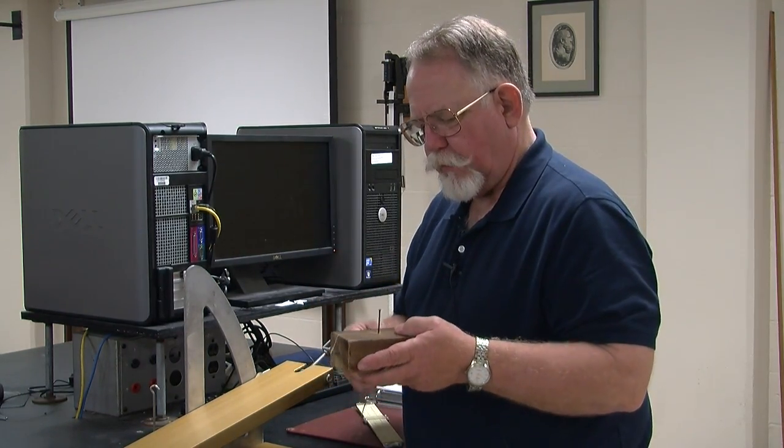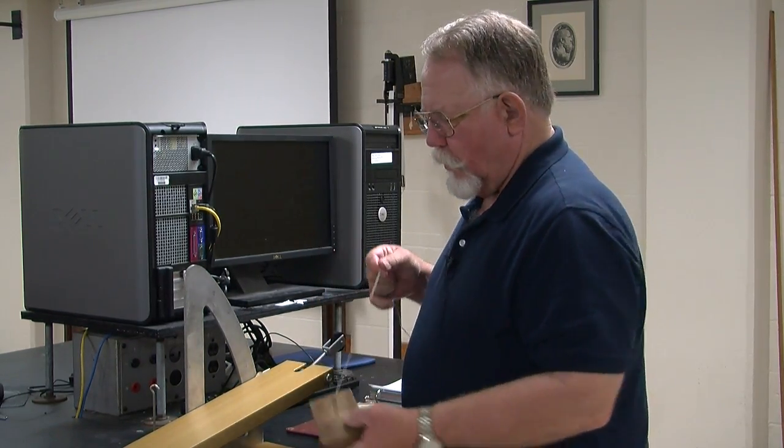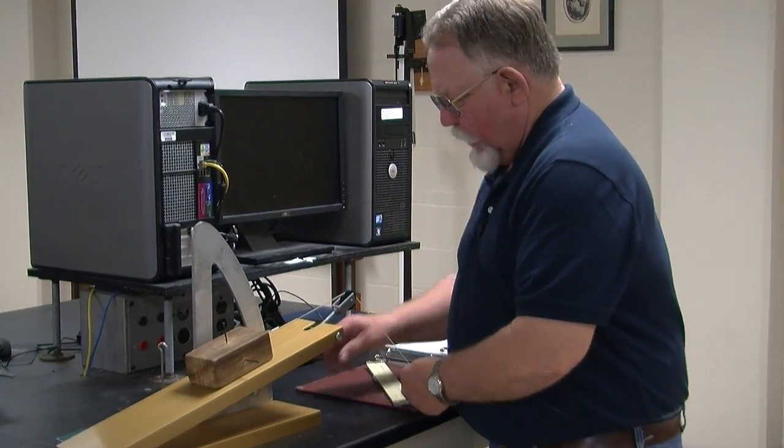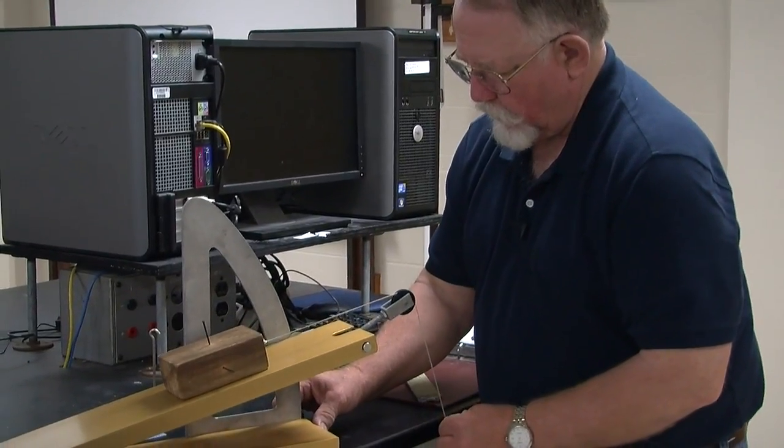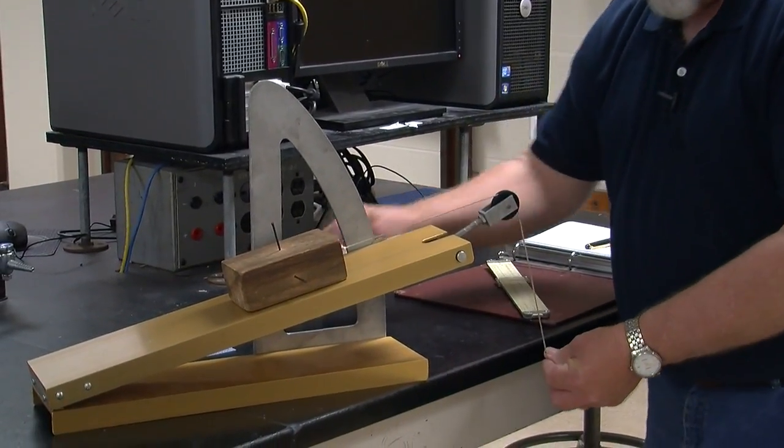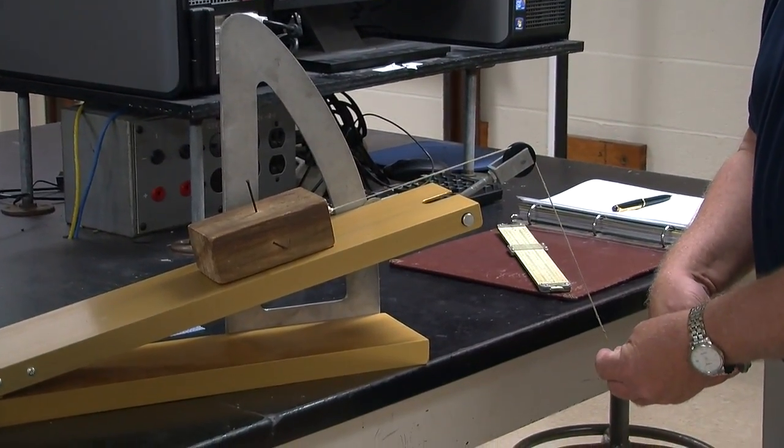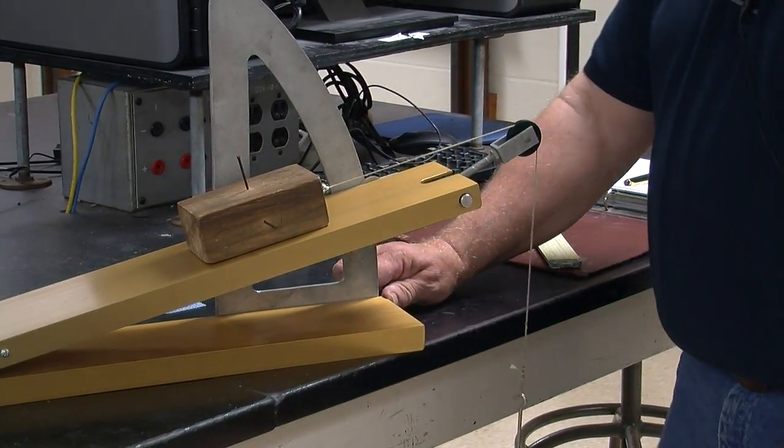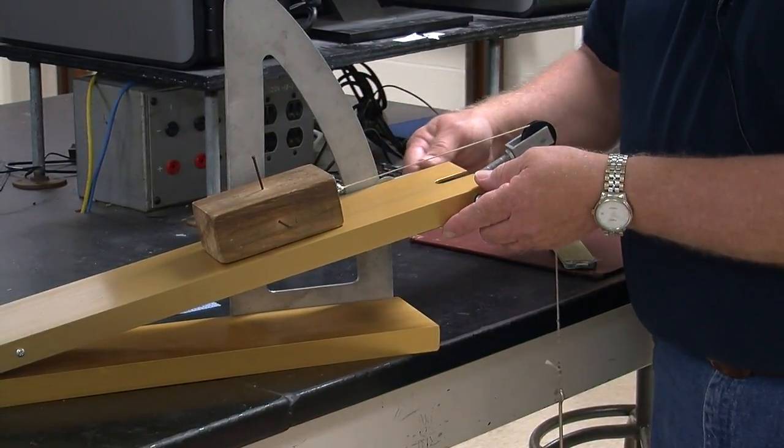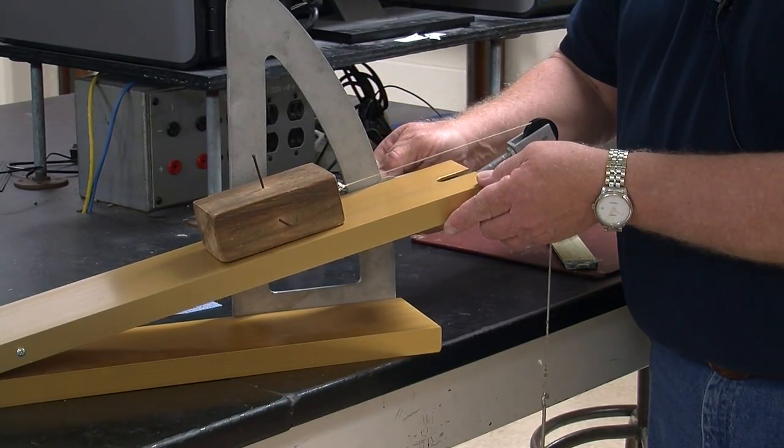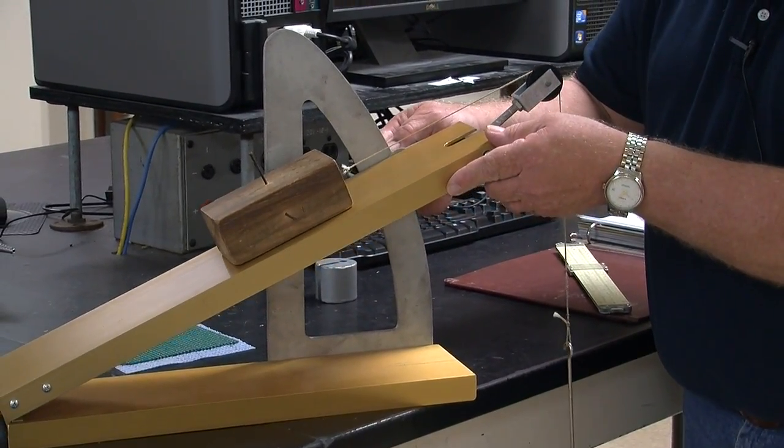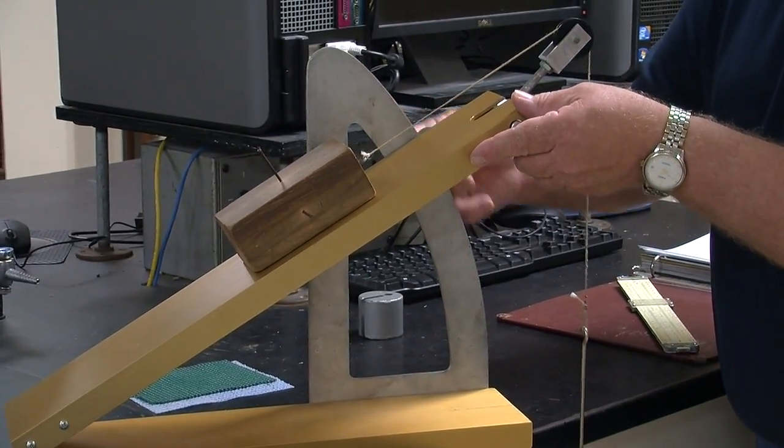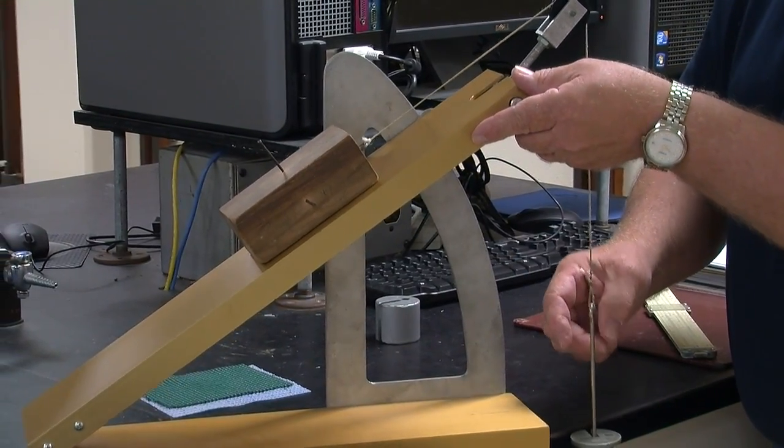But what we'll do is we'll pass the string over this pulley. And we'll put a retarding force of one newton. And now we'll find the new critical angle. This will change our equation, of course.